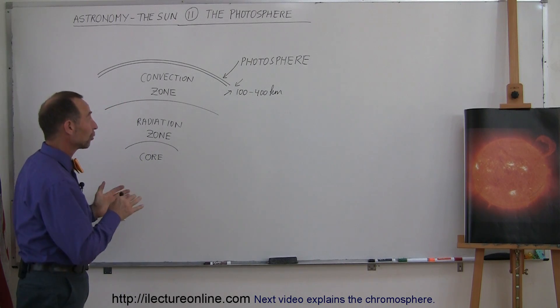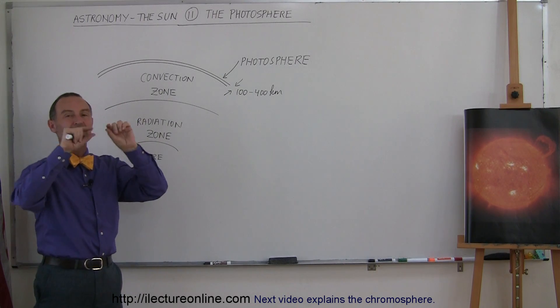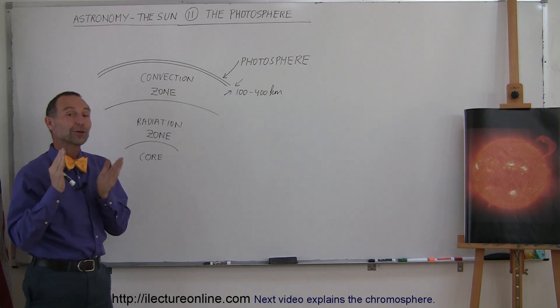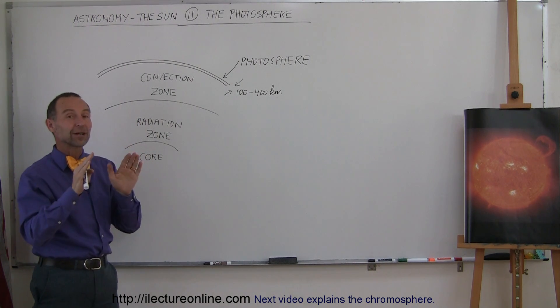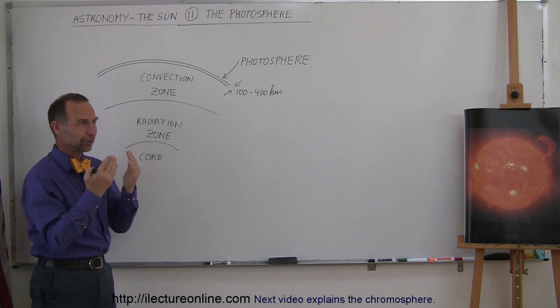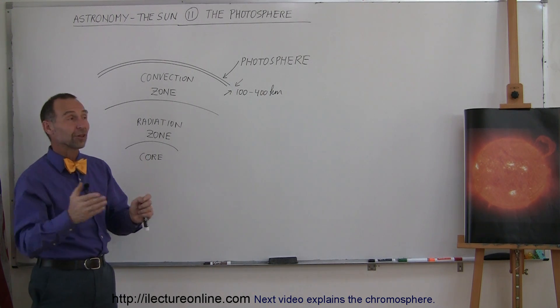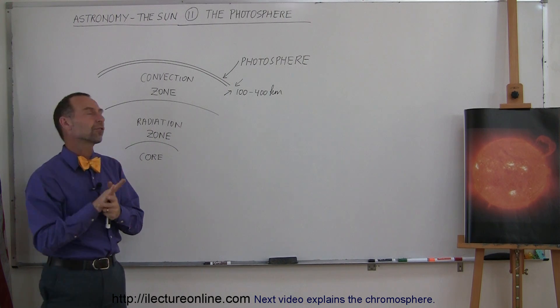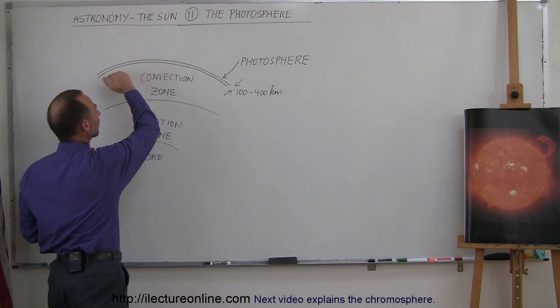Now we're going to talk about the Sun's photosphere. The photosphere is the visible layer of the Sun. When you're looking at the Sun, and again, I don't recommend you look at the Sun with the naked eye without any protection. You want to have special filters when you look at the Sun. And when we take pictures of the Sun, we're able to look at the Sun through special filters. We see the surface of the Sun, and the surface of the Sun is called the photosphere.